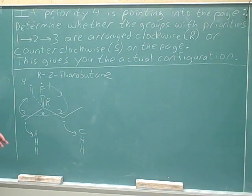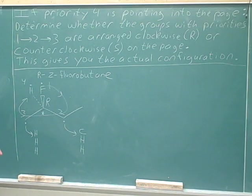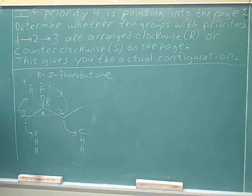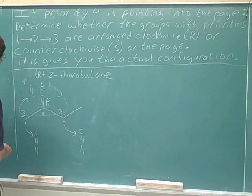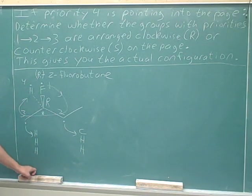Very often when people are doing problems or test questions, they forget to add an R or an S to indicate the stereochemistry. Once you've learned about stereochemistry in your course, your instructor is probably going to expect you to include R or S for every nomenclature exercise that has stereocenters. So you have to keep your eye open for that. The full IUPAC name for this compound is R-2-fluorobutane.